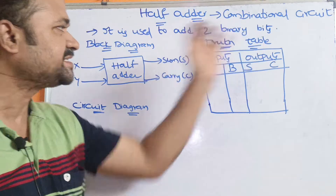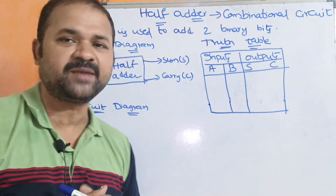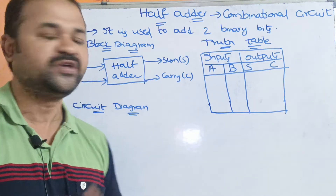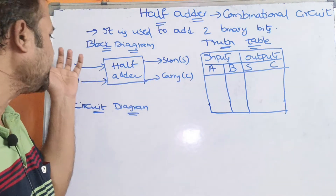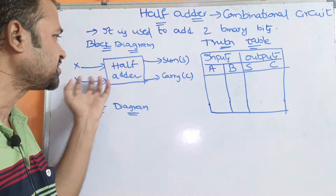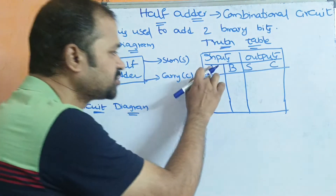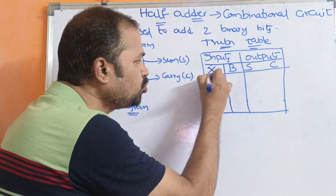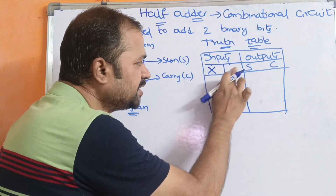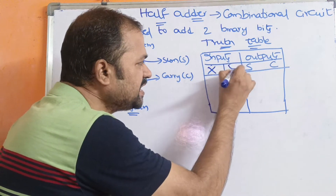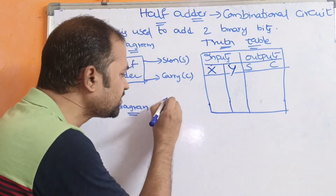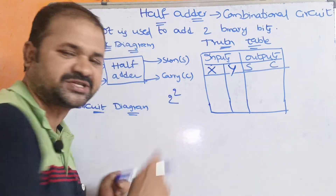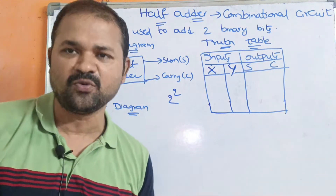Now let us see the truth table for the half adder. We know that the half adder accepts two inputs. If there are two inputs, then totally we will get 2 power 2 combinations — four combinations.